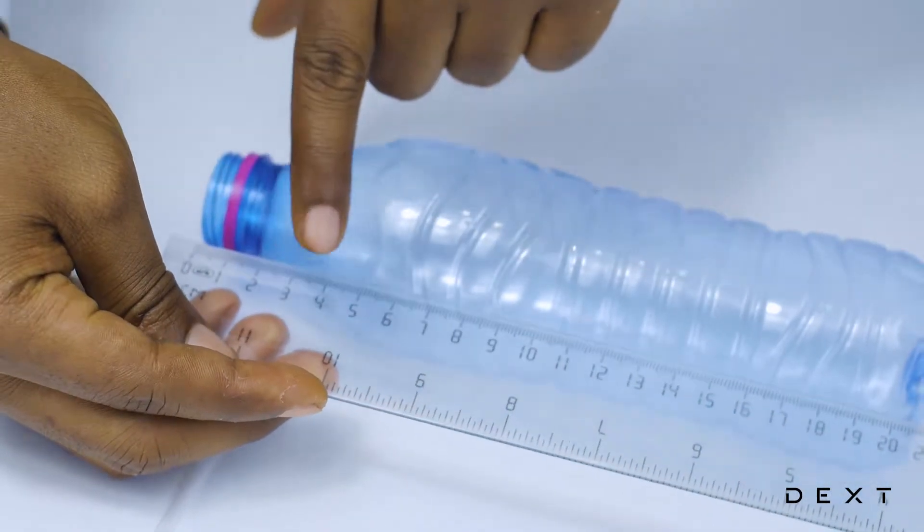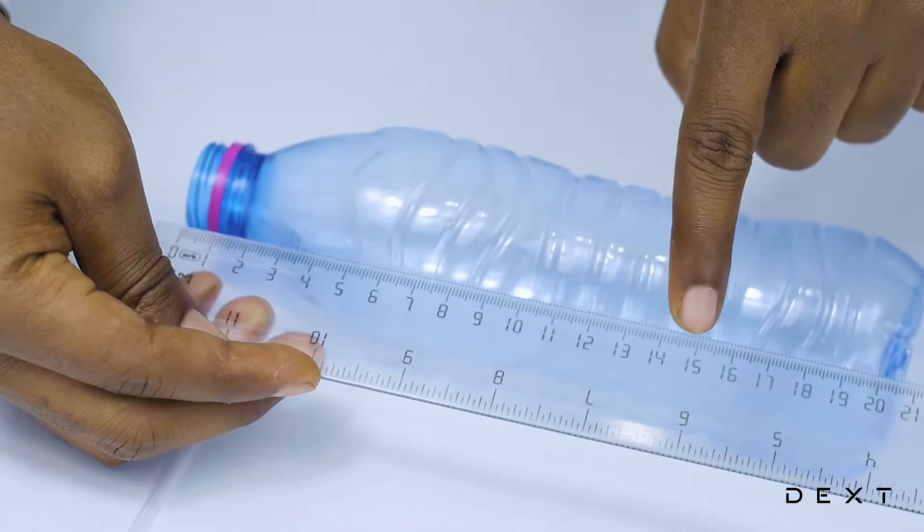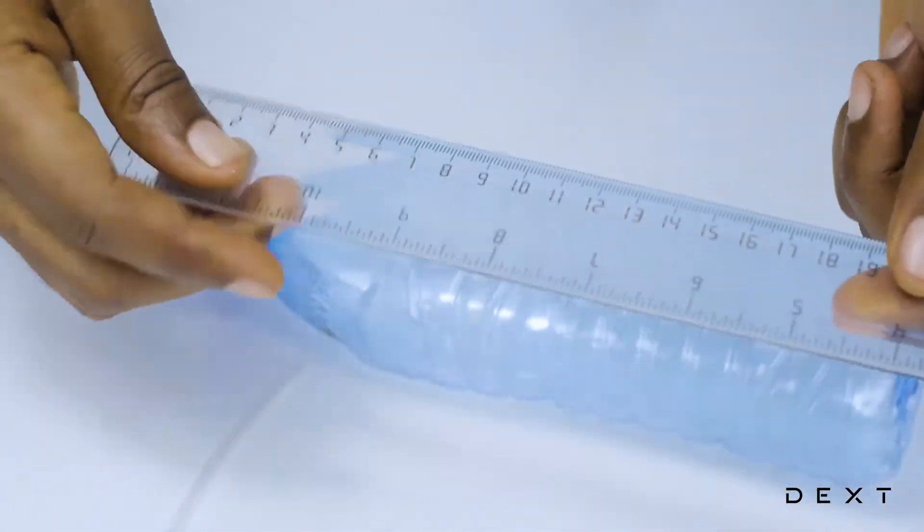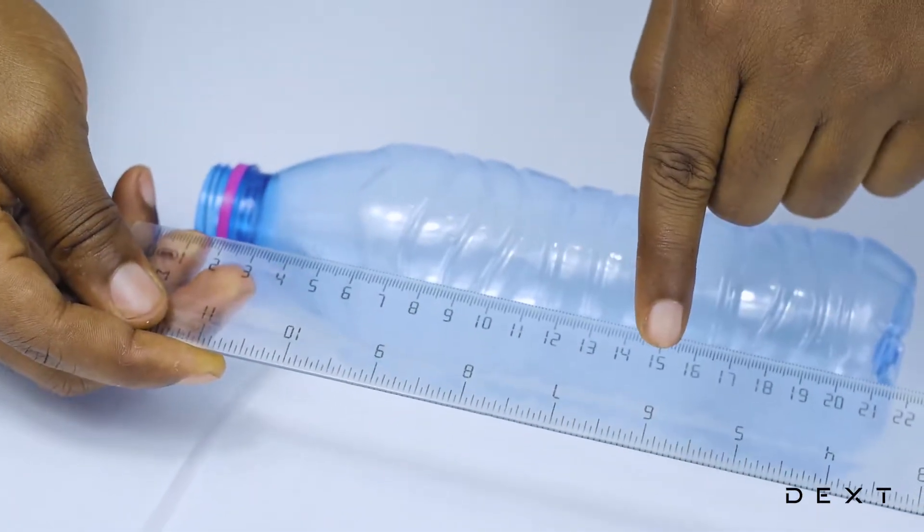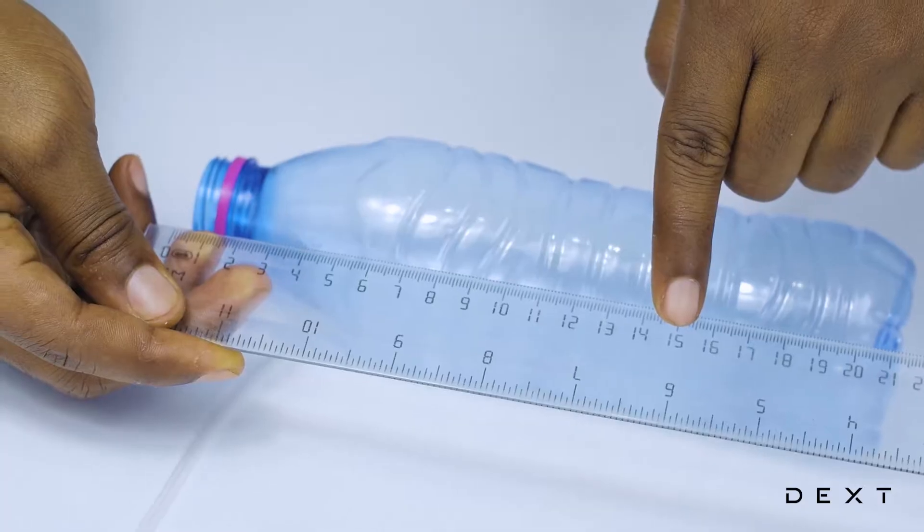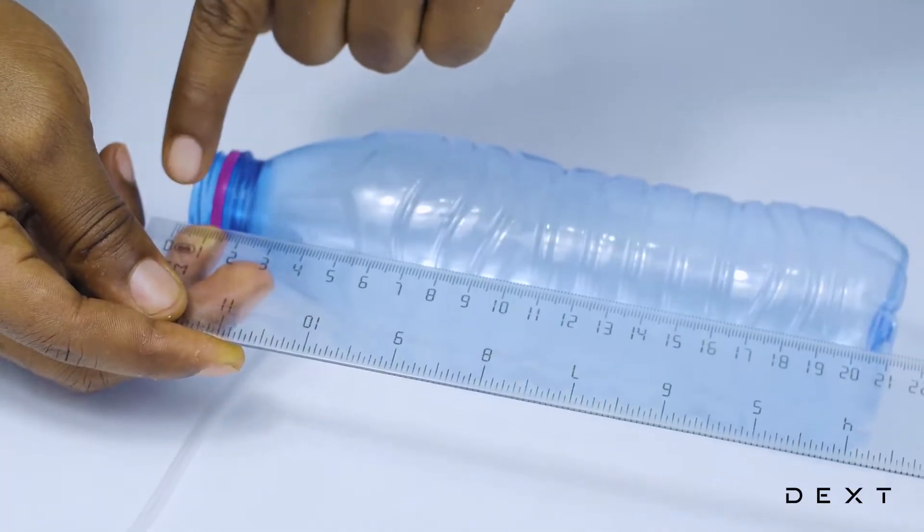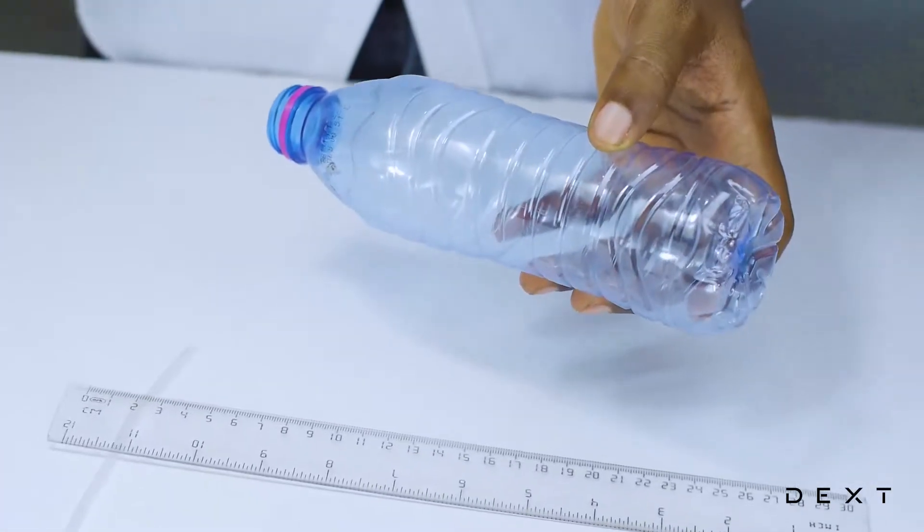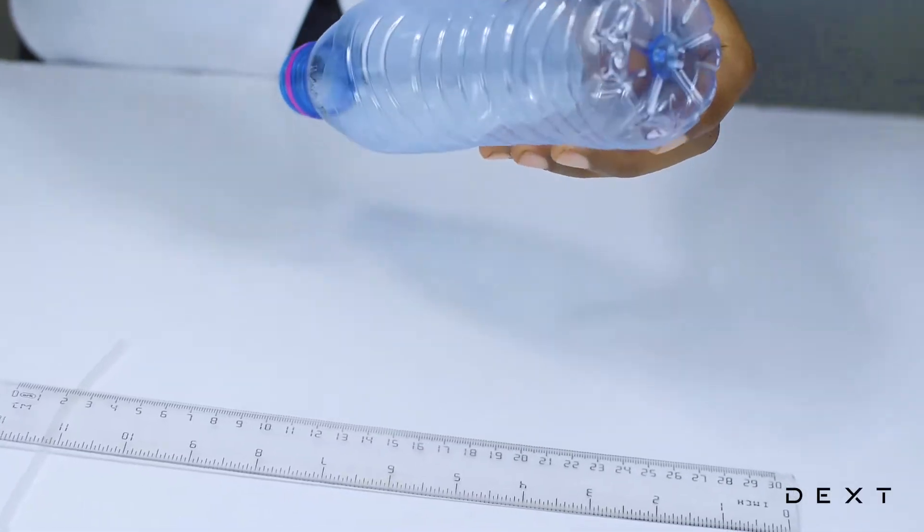We are going to get a ruler and then we are going to measure from the opening of the bottle to about 15 cm. And this is about the point where we are going to make our small hole.